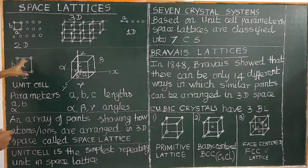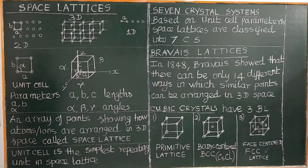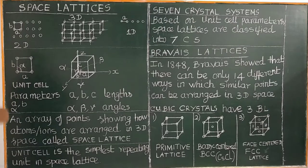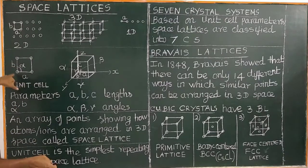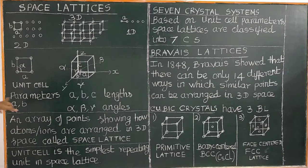What are the unit cell parameters? There are three unit cell parameters for a 2D unit cell: A and B are the unit cell lengths, and alpha is the angle between them. There are three unit cell parameters to describe the 2D space lattice unit cell.